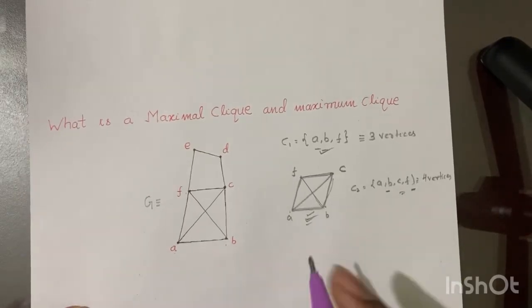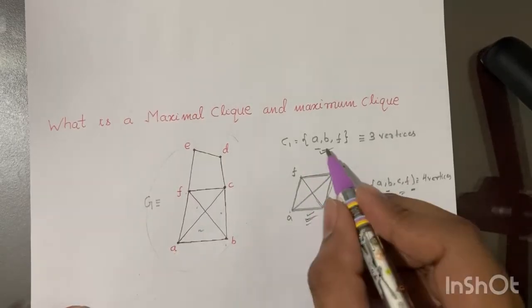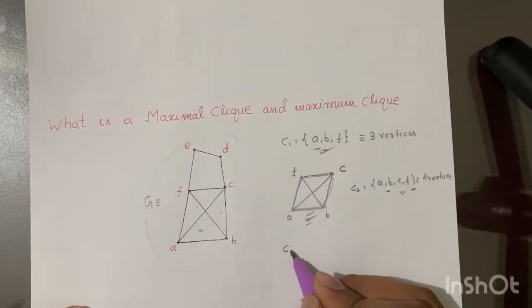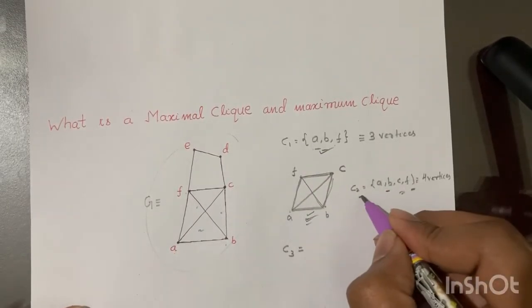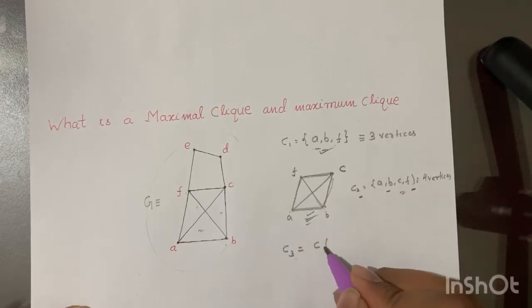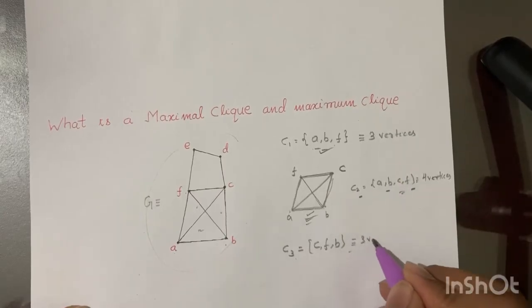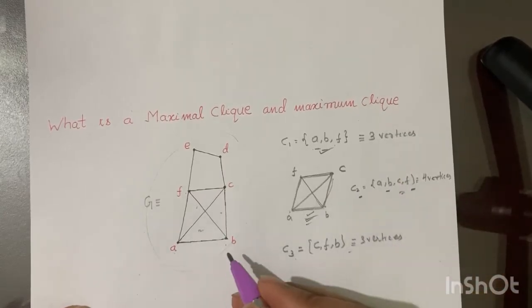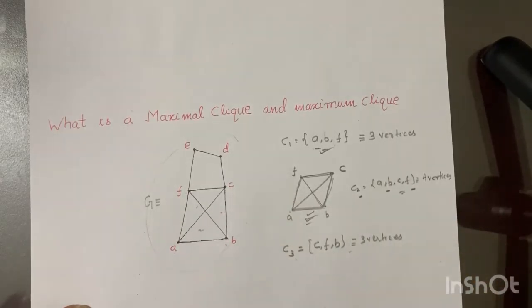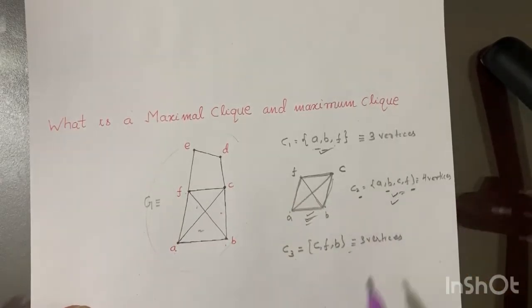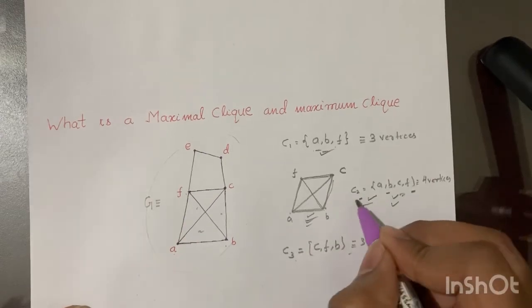Now moving to the maximum clique. How many cliques of this graph could you write? One could be A, B, F. The other could be C2 here. C3 could be C, F, and B. So this also has three vertices. You could even write more, but you would not be able to write a clique that has more than four vertices.